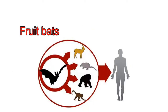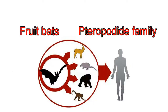Fruit bats of the Pteropodidae family are thought to be natural hosts of the Ebola virus. The virus is then passed to humans after contact with blood, secretions, organs, or other bodily fluids of infected animals, be it the fruit bats themselves or infected chimpanzees.